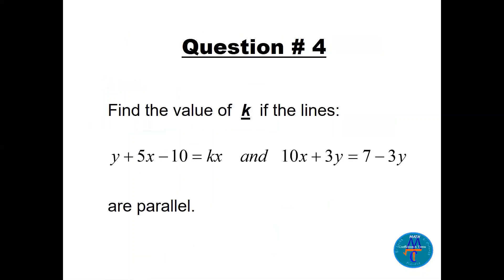Question 3 (parallel lines): Find the value of k if the lines are parallel. There is a little trick — the variables are arranged differently in each equation, so we need to rearrange both equations. Remember: parallel lines have the same slope.